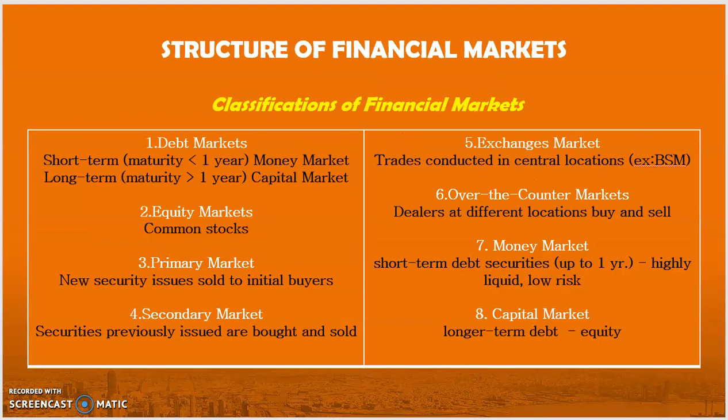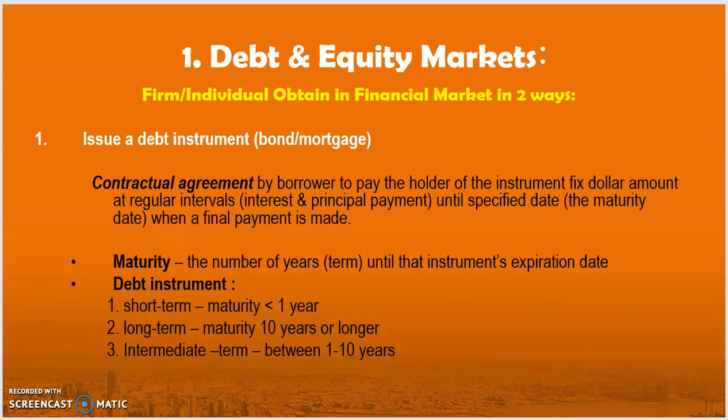Now let's look at the structure of the financial market, which is classified into eight types: debt market, equity market, primary market, secondary market, exchange market, over-the-counter market, money market, and capital market. Firms or individuals obtain funds in two ways. The first is by issuing debt instruments — bonds or mortgages — which are contractual agreements by the borrower to pay the holder fixed dollar amounts at regular intervals (interest and principal payments) until the maturity date. Debt instruments are divided into short-term (less than one year), long-term (ten years or longer), and intermediate-term (one to ten years).